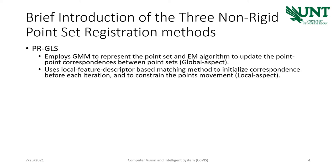The PR-GLS method employs a Gaussian mixture model to represent the point-sets. One point-set is taken as the GMM centers, and the other is considered as the points produced by the GMM. The expectation and maximization algorithm is used to update the point-to-point correspondence between point-sets, and this can be considered as a global aspect. The PR-GLS method also uses a local feature descriptor-based matching method to initialize the correspondence before each iteration and to constrain the point's movement, and this is considered as a local aspect.